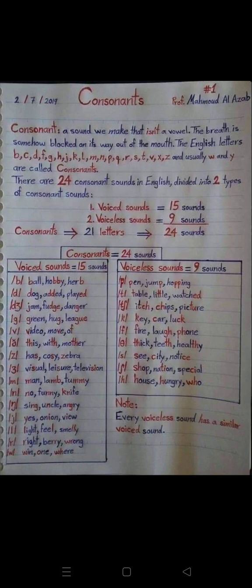Voiceless sounds (9): P — pen, jump, hopping. T — table, little, watch. CH — chips, picture. K — key, car, luck.